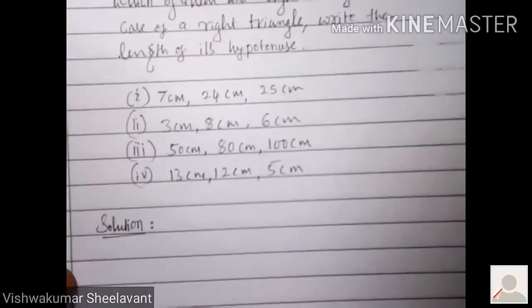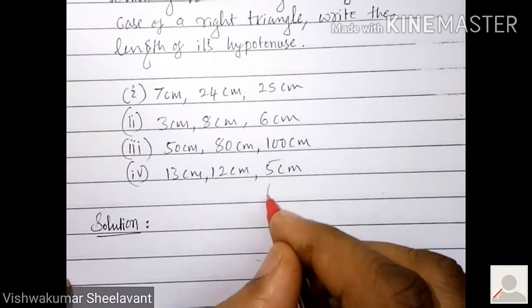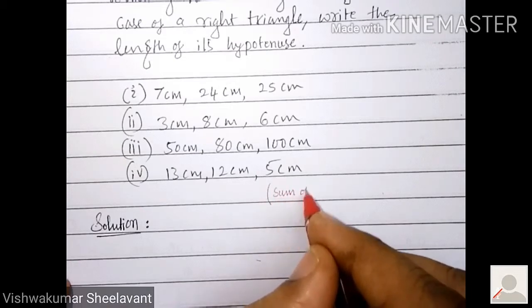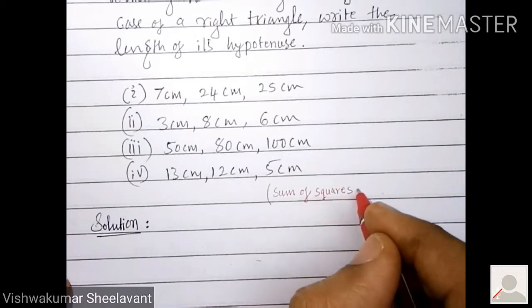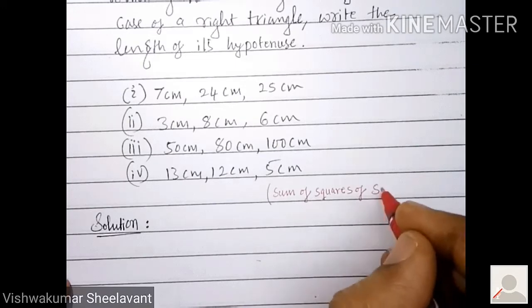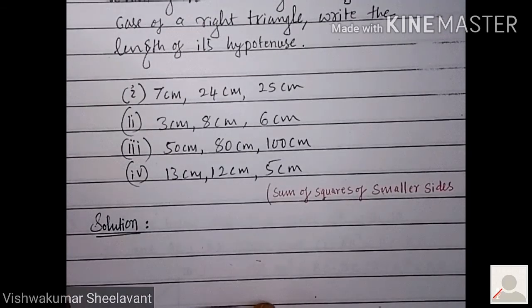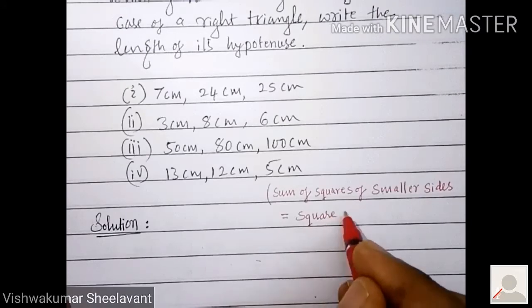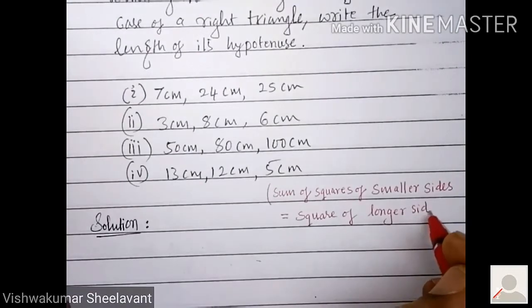I will give you just one small hint here. Check for sum of squares of smaller sides equal to square of longer side.